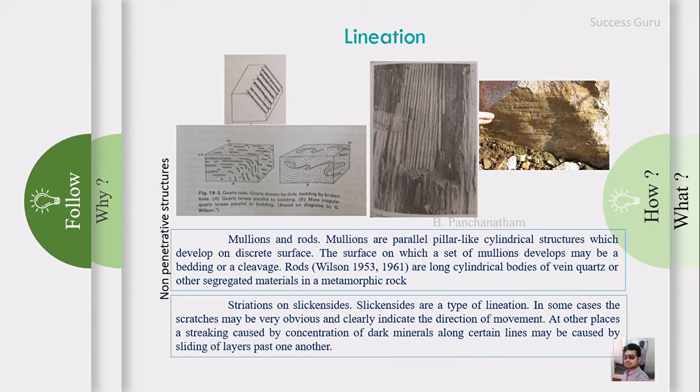The next non-penetrative structure is striations on slickensides. As you know, striations are formed on slickensides due to the movement of rock along a fault plane. Due to the movement, one block of rock may scratch or scrape on the other side of the rock, and that forms striations on slickensides. In some cases, striations may very obviously and clearly indicate the direction of movement. In other places, striations caused by concentration of dark minerals along certain lines may be caused by the sliding of layers past one another.